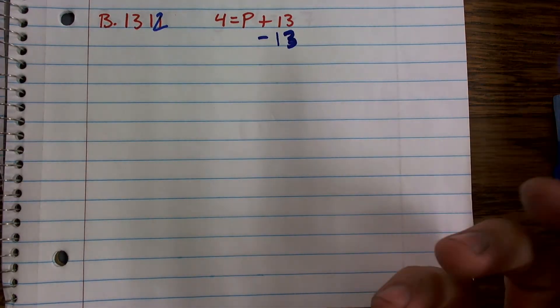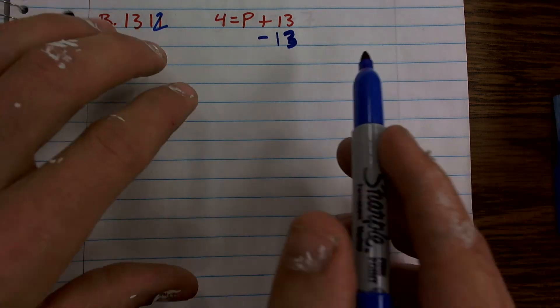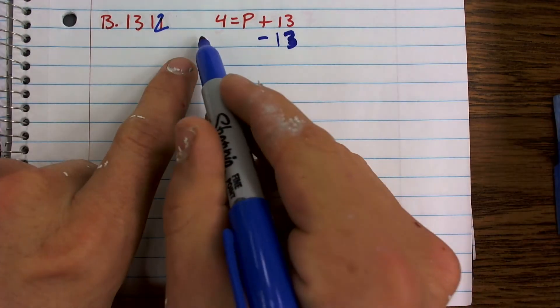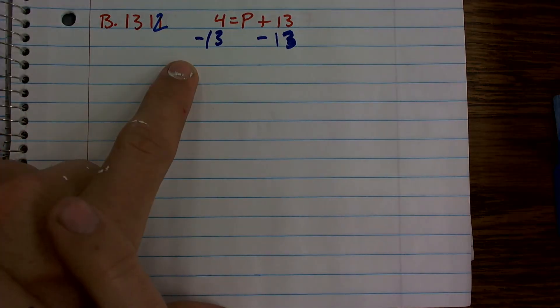That's a bad 13. Now I need to make sure that I use my subtraction property of equality. Since I'm dealing with an equation, I need to make sure I subtracted 13 on both sides.